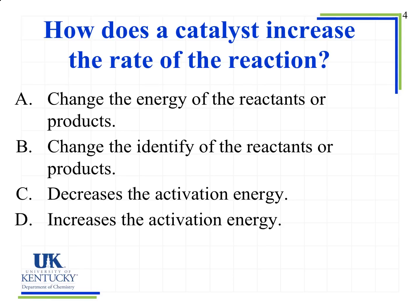A catalyst decreases the activation energy. The energy of the products and reactants stay exactly the same; the identity of the products and reactants stay exactly the same. What changes is the activation energy — the hump the reaction has to get over to start. An analogy: if we had a bed that lifted us up and slid us onto the floor, that would be a catalyst — it decreases the activation energy needed to get out of bed in the morning.